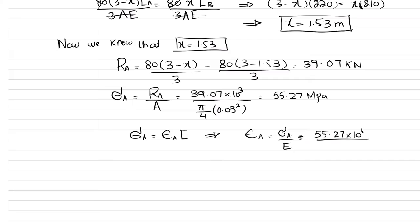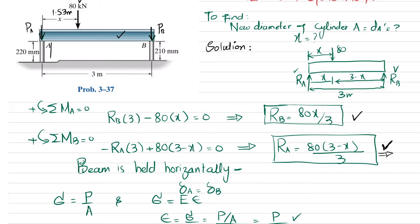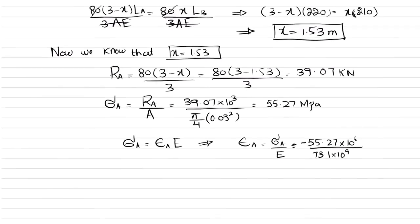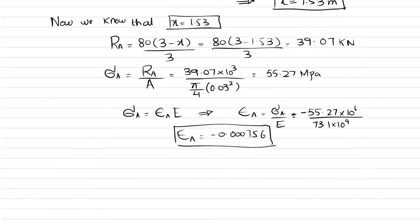Since the stress is compressive — the beam exerts a compressive force on the cylinder — the longitudinal strain is negative. A compressive load reduces the length of the cylinder while its diameter increases. Therefore, εL = −0.000756.